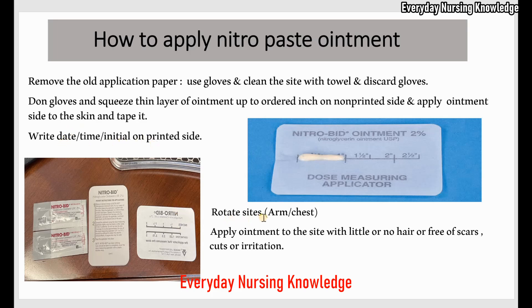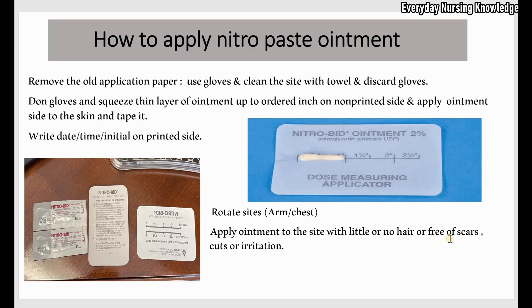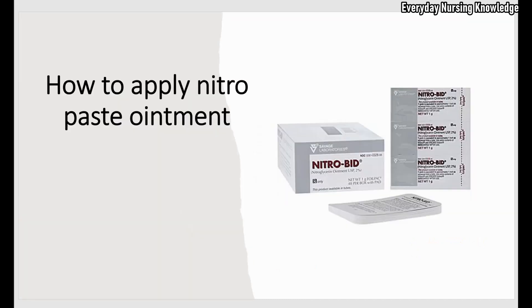Always remember to rotate the sites. You can rotate between the arm, chest, or if the applicator was on the left chest, you can apply the new one on the right chest. Also remember to apply the ointment to a site with little or no hair and free of scars. This is for better penetration. Avoid areas with cuts or irritation. So today we learned how to apply nitropaste ointment — thanks for watching.